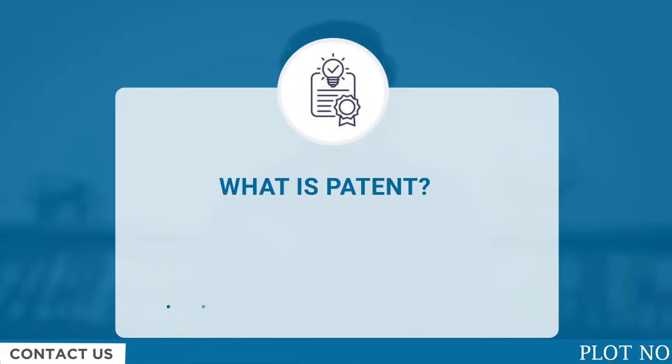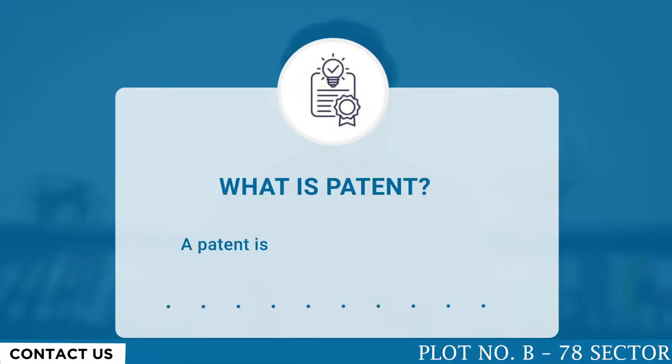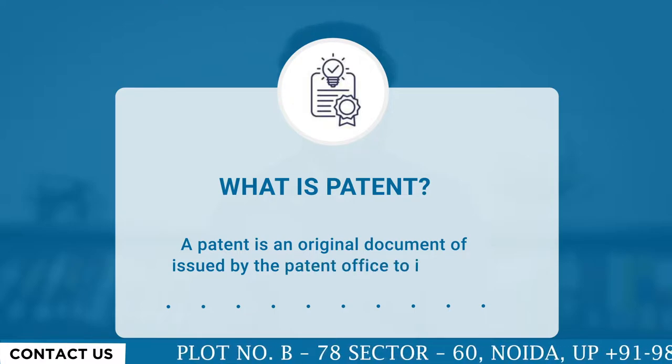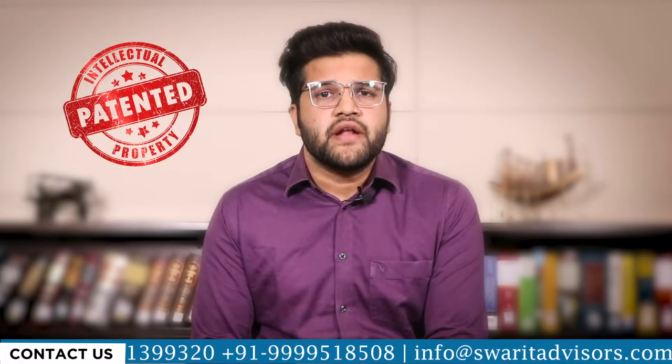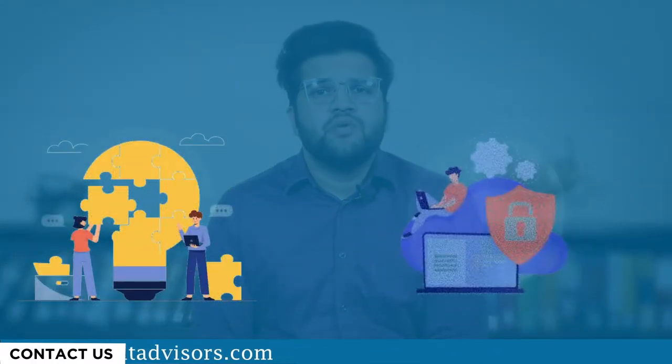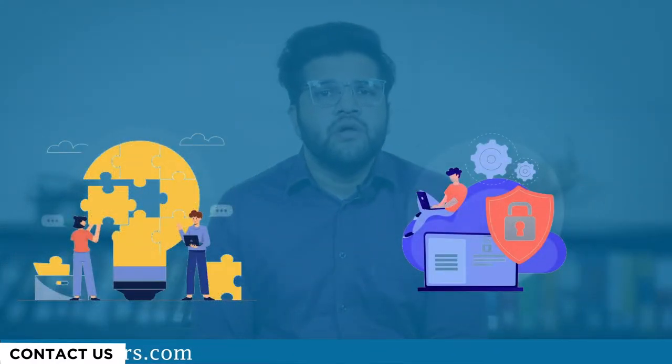What is a patent basically? A patent is an original document issued by the patent office to an inventor. To protect the subject matter under consideration, a patent is a government-granted exclusive right to an inventor that prevents others from using the invention without his permission. Basically, a patent is a lawful document that protects an innovation.